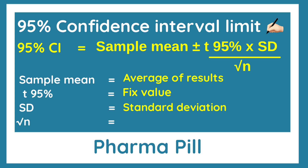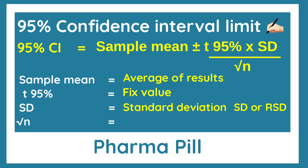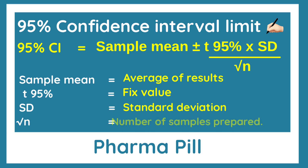Standard deviation can be calculated with the help of Excel or Google for all five or three preparations, based on how many preparations you are using for retesting. One important point: do not get confused between relative standard deviation and standard deviation — these are two different terms. We have to use only standard deviation during our 95% confidence interval limit calculation. The last component is √n, where n indicates the number of samples being prepared during retesting — either three or five.